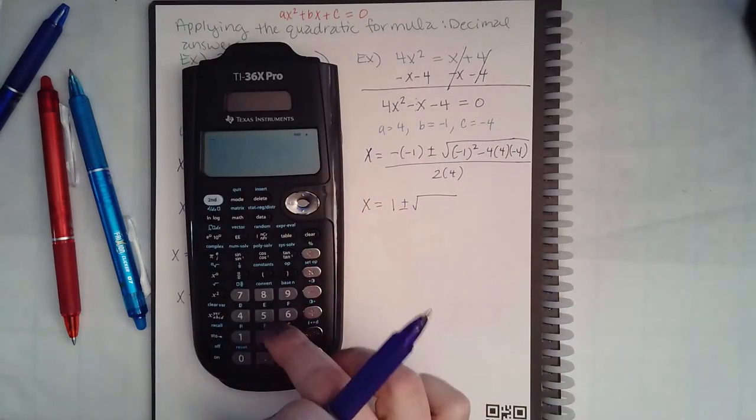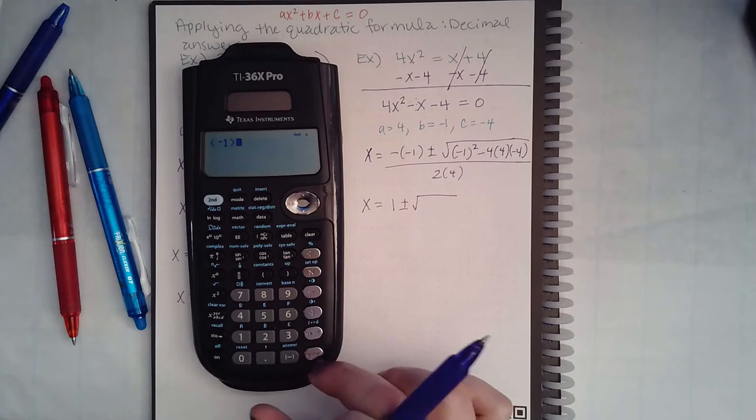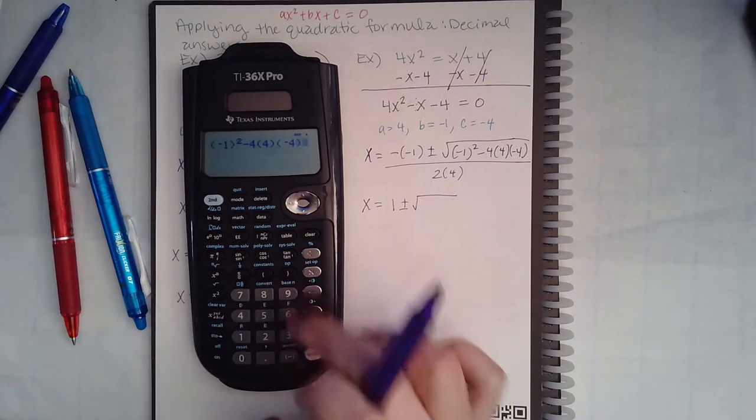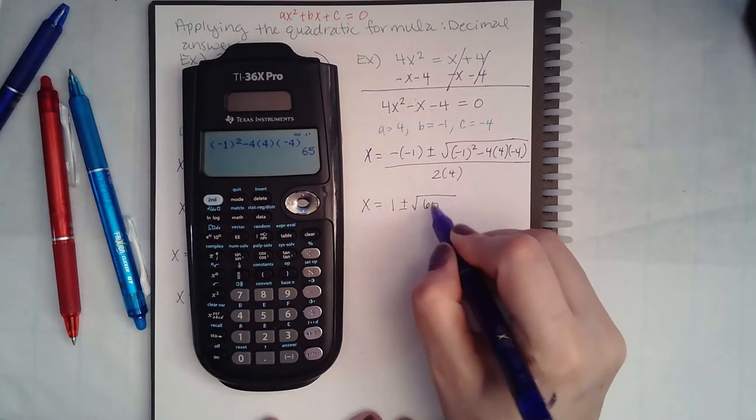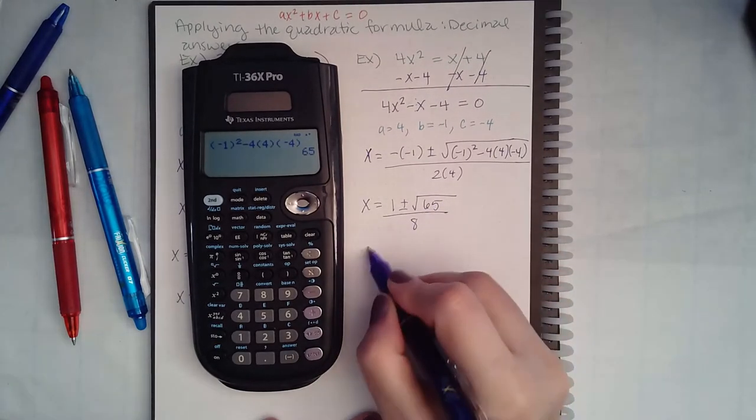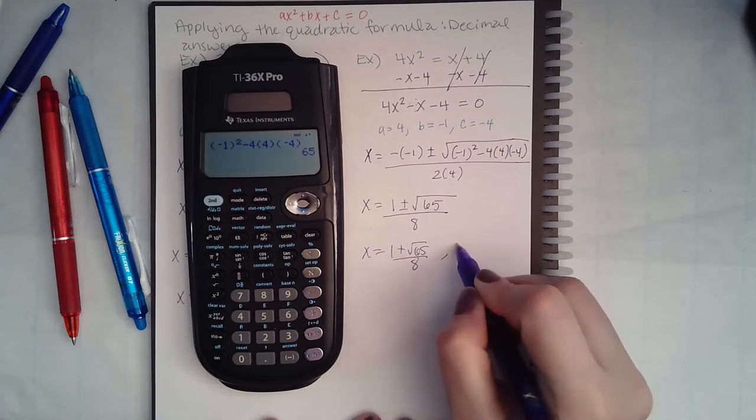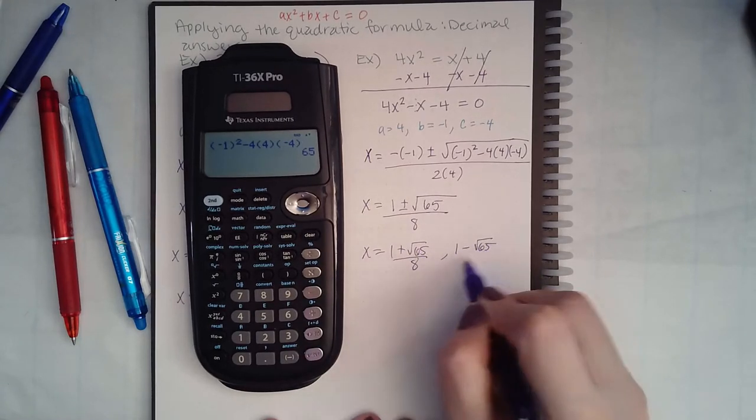Let's see what that is inside the radical: negative 1 squared minus 4 times 4 times negative 4. We get 65, so then we have 1 plus square root of 65 over 8, and 1 minus square root of 65 over 8.